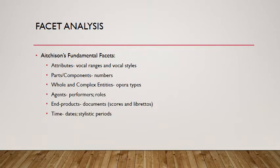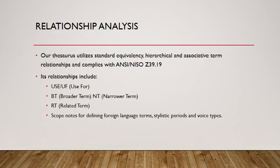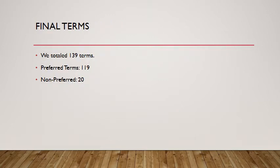Acheson's fundamental facets were used to perform our facet analysis. The relationship analysis was conducted using the required hierarchical relationships, including scope notes for foreign language terms that have not yet entered English as loan words, voice types, and stylistic period timelines. After editing for duplicate terms and non-domain specific terms, our list was narrowed to 139. Of those, 119 became our preferred terms and 20 became non-preferred terms.